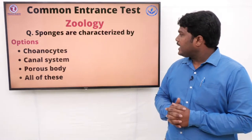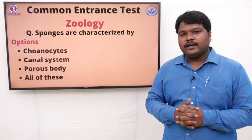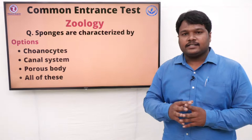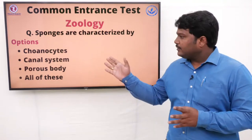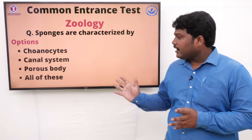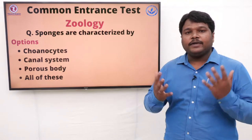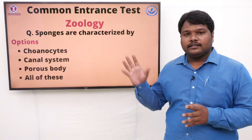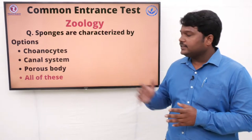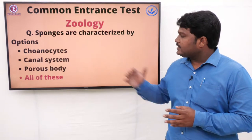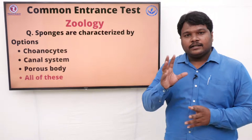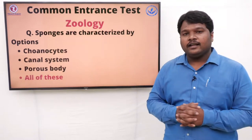Question 4: Sponges are characterized by. Different types of living organisms are there, and sponges are one type. The options are: A) Choanocytes and canal system, B) Porous body, C) All of these. The answer is all of these. Sponges contain choanocytes, a canal system, and a porous body — all three aspects are present in sponges.